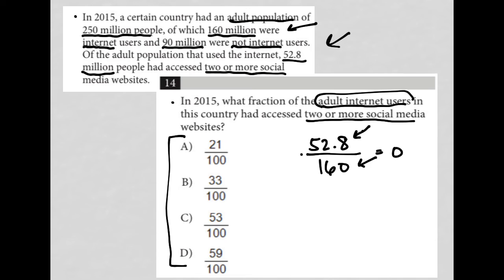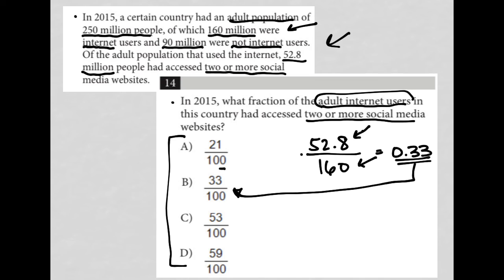When you put this into your calculator, what you should get is 0.33 — basically one third of the adult Internet user population has accessed two or more social media websites. So 0.33 corresponds with 33 out of 100, and therefore the correct answer is choice B.